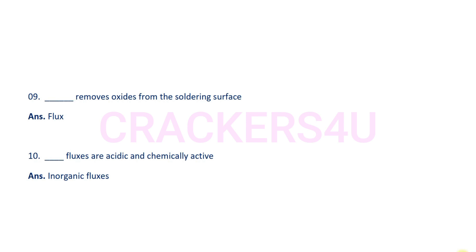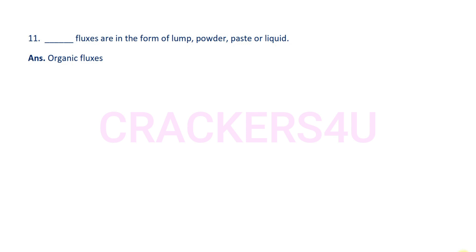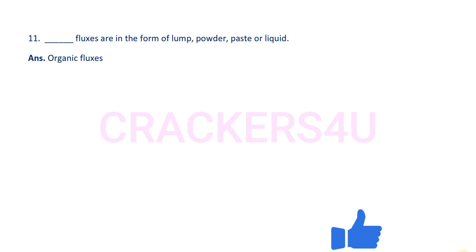Question 10: Dash fluxes are acidic and chemically active. Answer: Inorganic fluxes. Question 11: Dash fluxes are in the form of lump, powder, paste, or liquid. Answer: Organic fluxes are in the form of lump, powder, paste, or liquid.